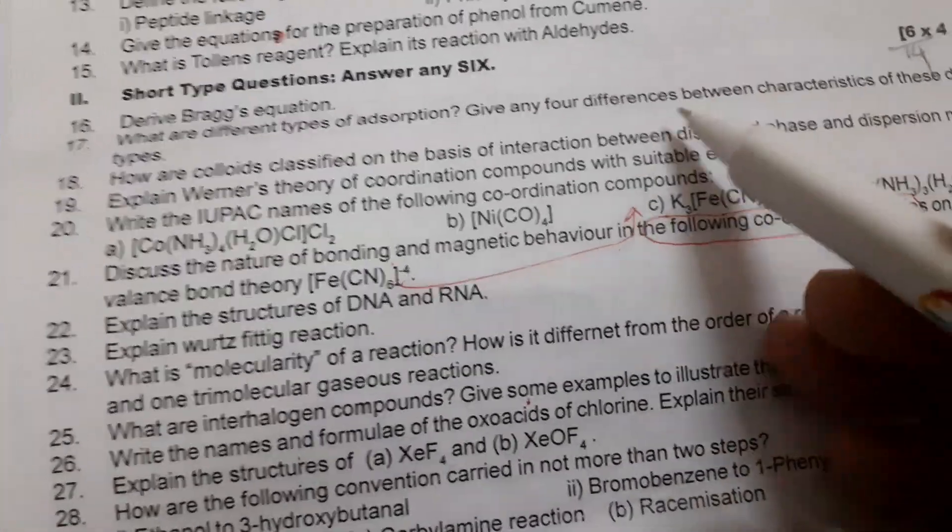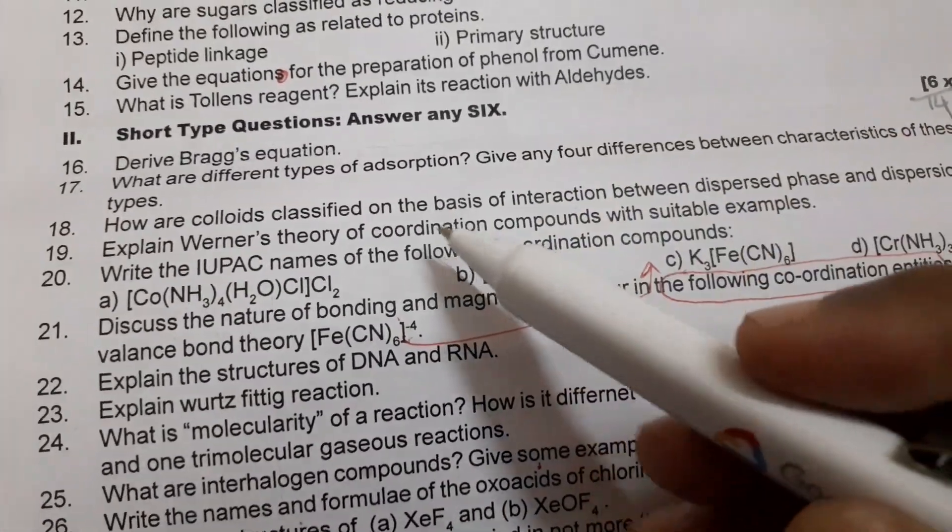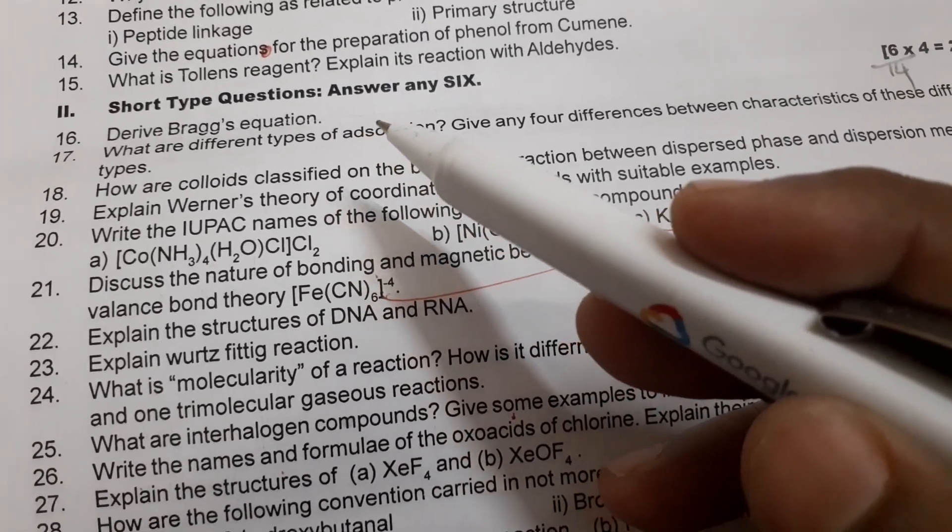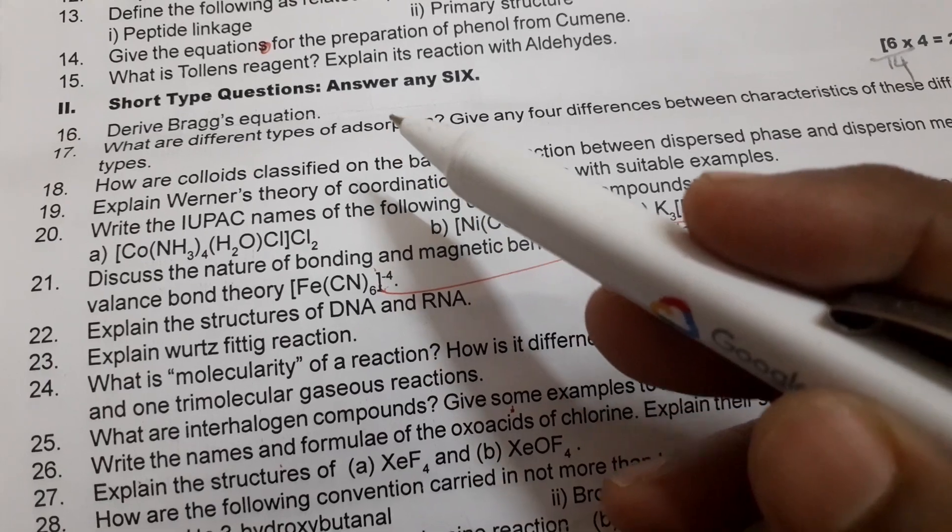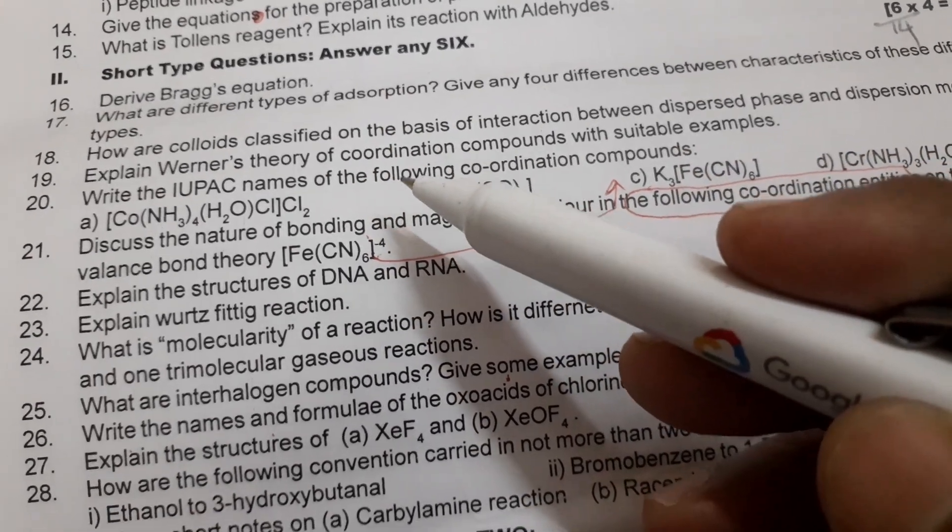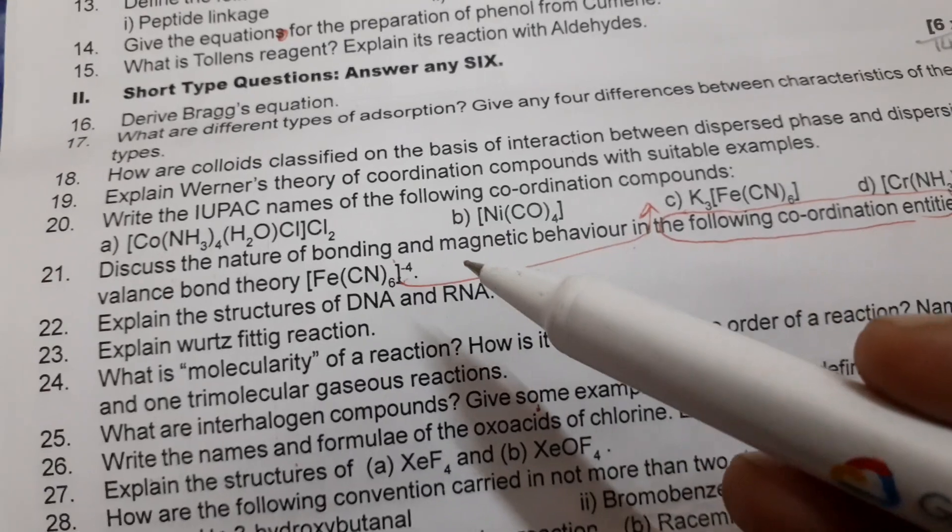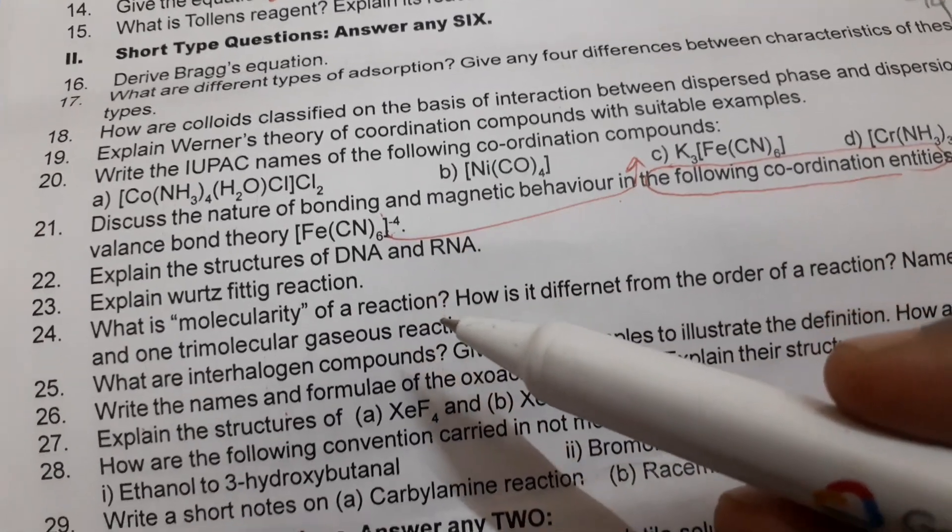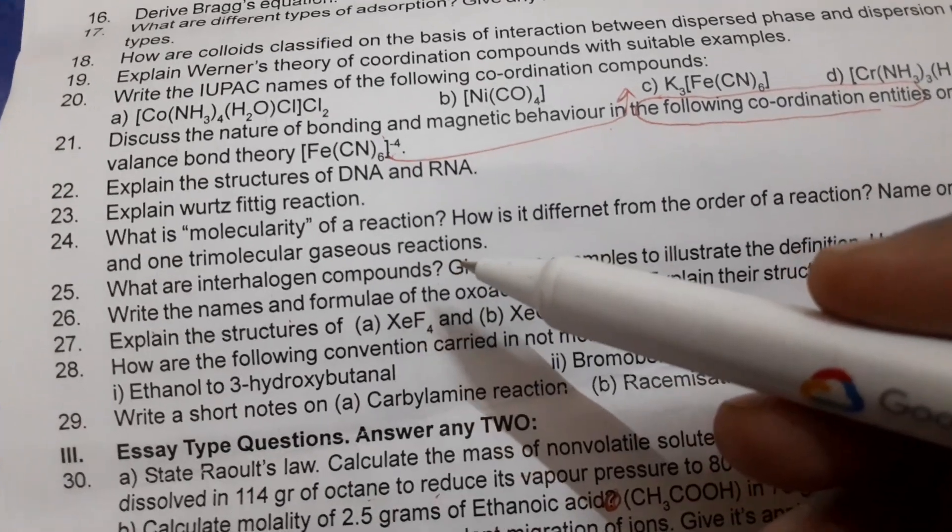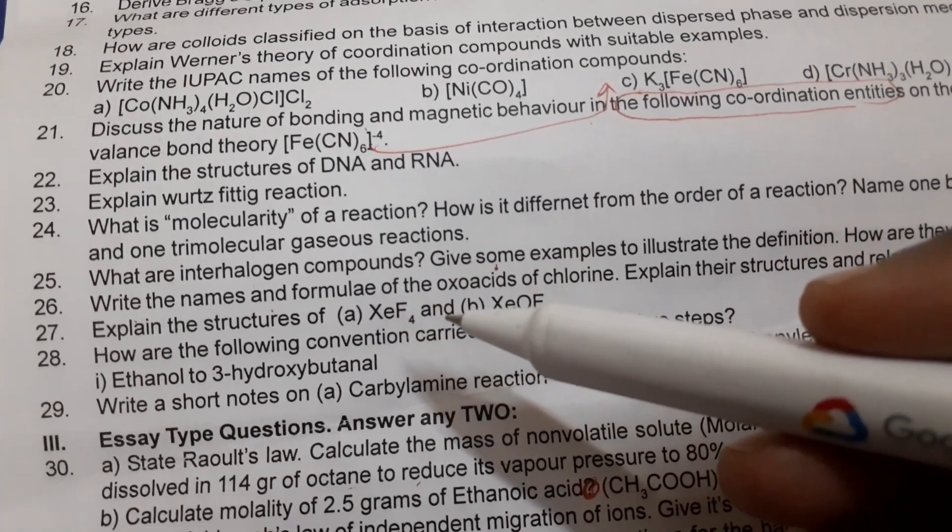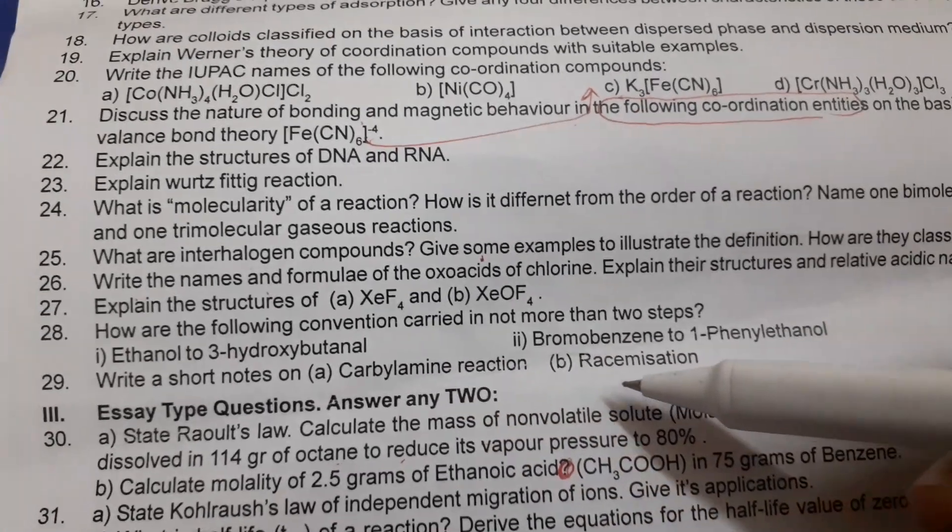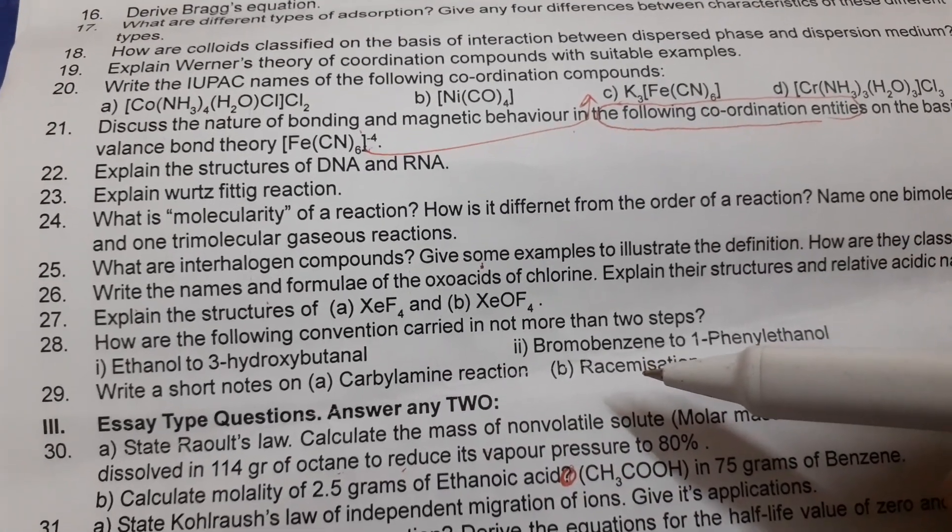These are the questions, go through the questions. SAQs, four mark questions, 14 questions are there: 1, 2, 3, 4, 5, 6, 7, 8, 9, 10, 11, 12, 13, 14. Question number 16 to 29, so how many? 14 questions are given, 14 questions are there.